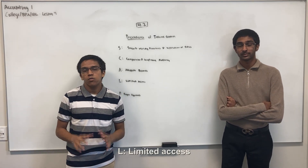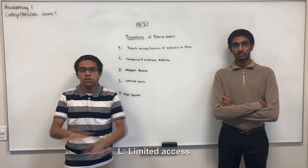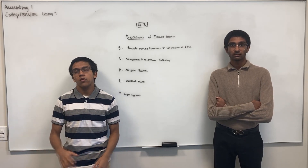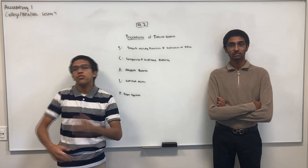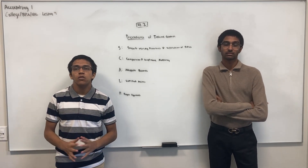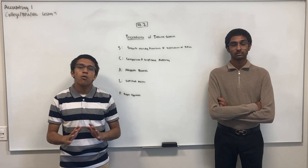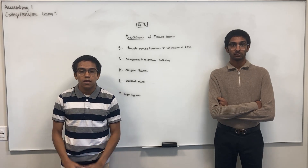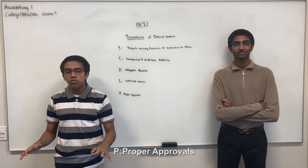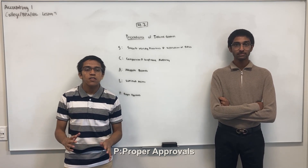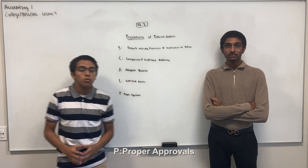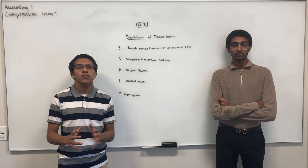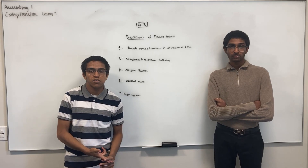L stands for limited access — we don't want any single employee having unrestricted access to the whole system. This takes the form of physical access controls and encryption so only certain employees can access specific areas. Employees often rotate positions to prevent one person having full knowledge of the system. P stands for proper approvals — the bigger the transaction, the more specific the approval required. Every transaction needs approval and only approved vendors are allowed for purchases. A limitation of these procedures is collusion: two or more employees collaborating to commit fraud.